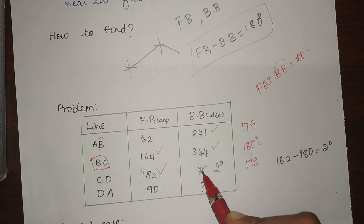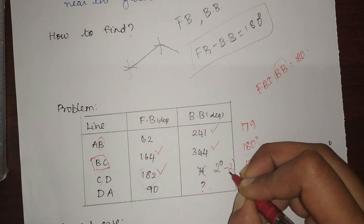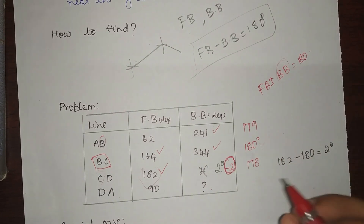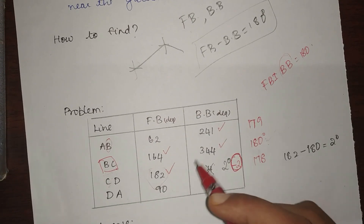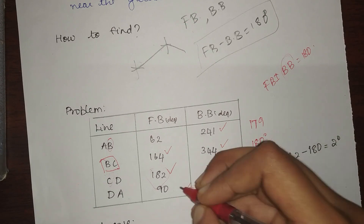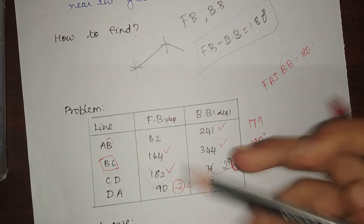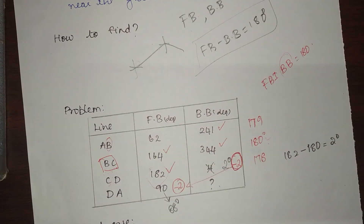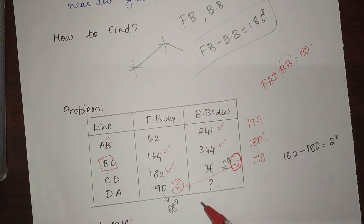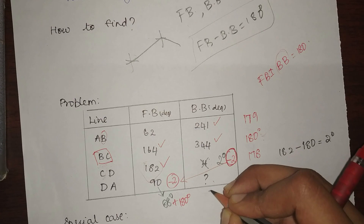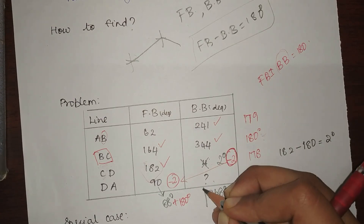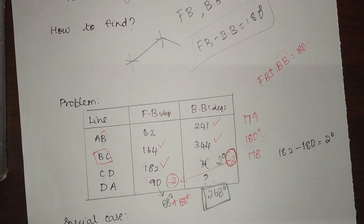The difference between 4 and 2 is minus 2, so I apply a correction of minus 2 to get the correct back bearing. I apply the same correction to the fore bearing of CD: 90 minus 2 equals 88 degrees. Now, to find the unknown back bearing of DA — since 88 is less than 180, I add 180 degrees — which gives 268 degrees. The answer is 268 degrees.